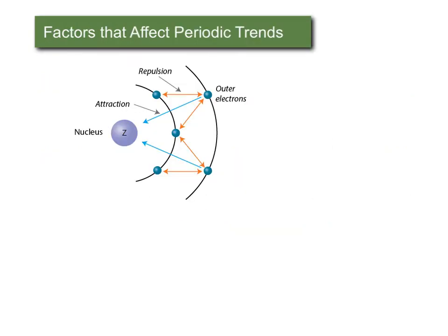You can probably see this a little bit better here with this illustration. So here we have the nucleus, this purplish sphere with a Z on it, and the electrons are shown as little blue spheres. An electron in the outermost shell is going to feel the force of attraction to the nucleus, which are represented by these blue arrows.